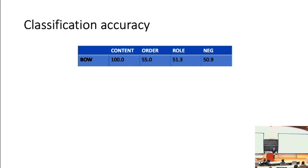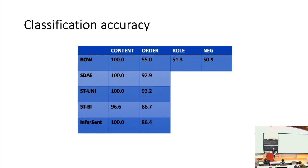The word order task is binary: given probes X and Y, does X precede Y in the sentence? For the sequence model sentence encoders on the sanity check tasks, we see that they're roughly at ceiling on word content and still very strong on word order, which is roughly what we'd expect since unlike bag-of-words, these models retain information about word order.